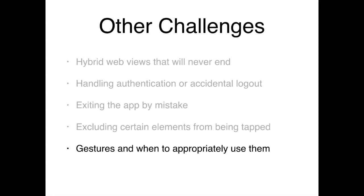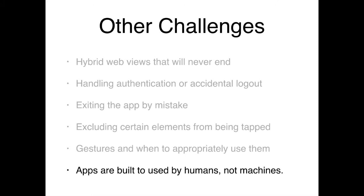I also needed to exclude certain elements from ever being tapped — for example, the logout button. You want to stay in the application to crawl through it, but you don't want to tap logout. Gestures also needed careful handling — many native apps use gestures like swiping left and right, force touch, tap and hold — and you need to know when to properly use these. Apps are built to be used by humans, not machines, so building software to test software meant to be used by humans can be tricky.